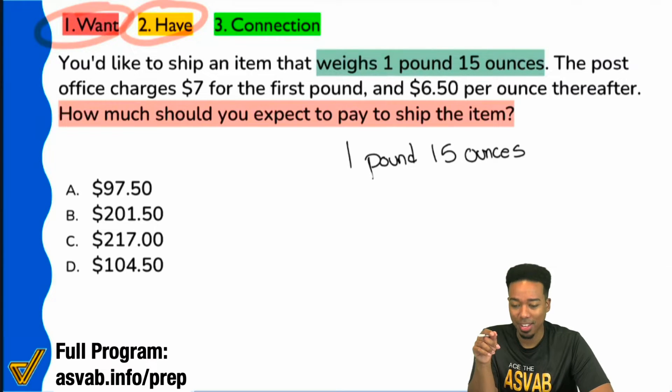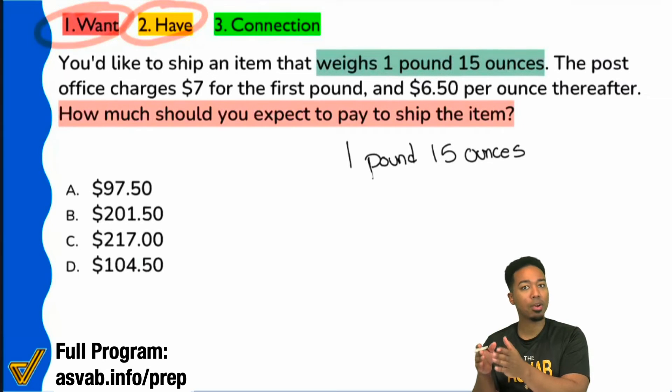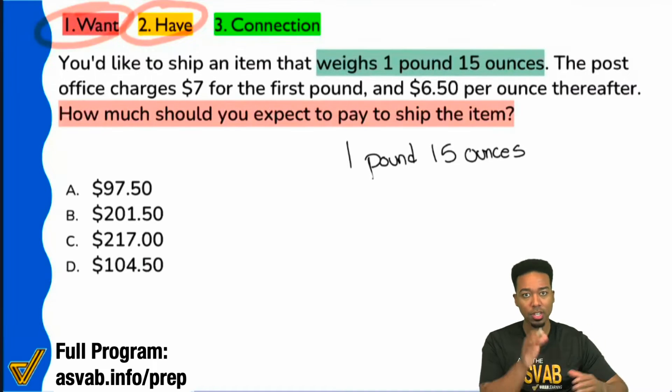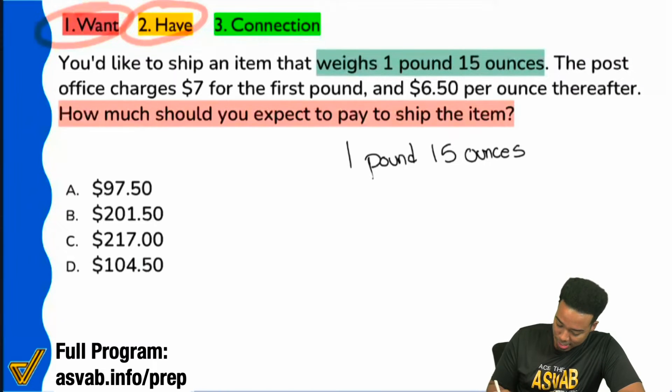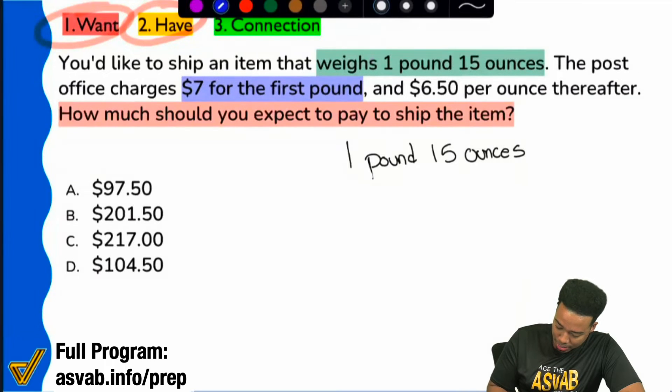So, boom. Now, we're having a lot of people here chiming in. And we see that the first pound, $7. I see a lot of people here saying that $7, one pound, one pound, one pound. Evelyn put it best. Evelyn says, hey, we have a set price. And then we have the additional charge. Notice what it says here. It says, hey, let me use a different color. It says $7 for the first pound. And then it says, $6.50 per ounce thereafter.